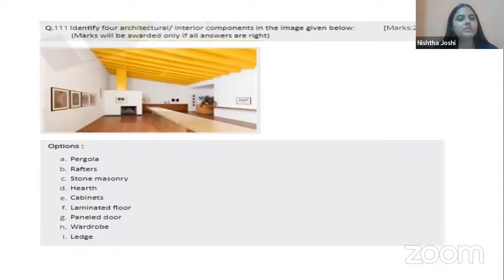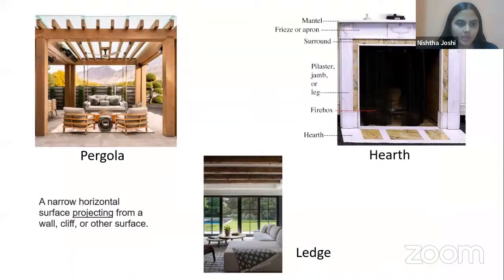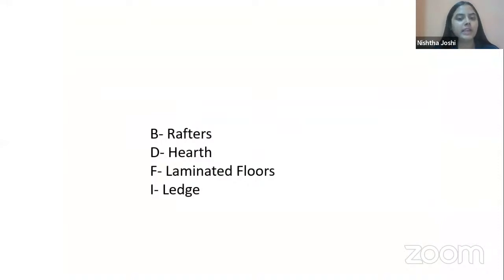Identify four architectural or interior components in the given image of a room. Most colors are basic, but the roof is very highlighted. There are rafters visible, some minimalistic design, basic colors, and niches — but no visible door or window. I explain the terminologies: a pergola is a shed in open space, a hearth is the floor of a fireplace, and a ledge is a projecting shelf. The right answers are B (rafters), D (wood), F (laminated floors), and ledge.